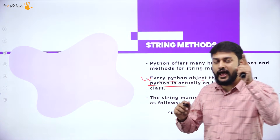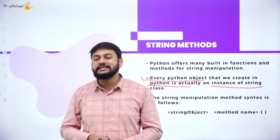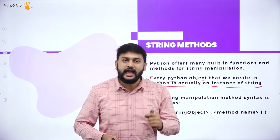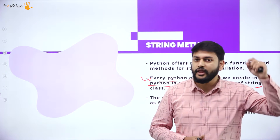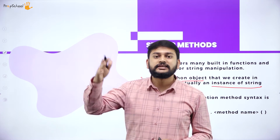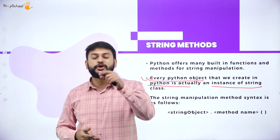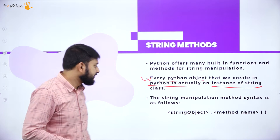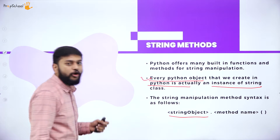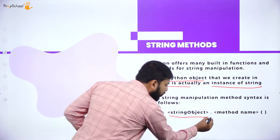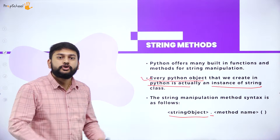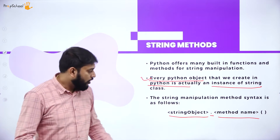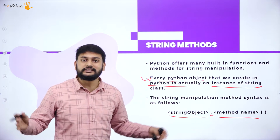Every object created in Python is a copy of the string class. In Python, everything is treated as an object. The syntax for string manipulation is: string_object dot method_name. Using the dot operator, you can access the different method names you want to perform on a particular object.